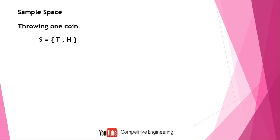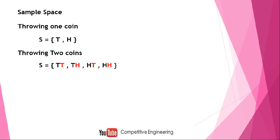When throwing two coins, we get another sample space. The first coin gives something and the second coin gives either head or tail. So the sample space is {TT, TH, HT, HH}, where T means tail and H means head. TT means the first coin shows tail and the second coin shows tail. TH means first coin is tail, second coin is head. HT means first coin is head and the second coin is tail.